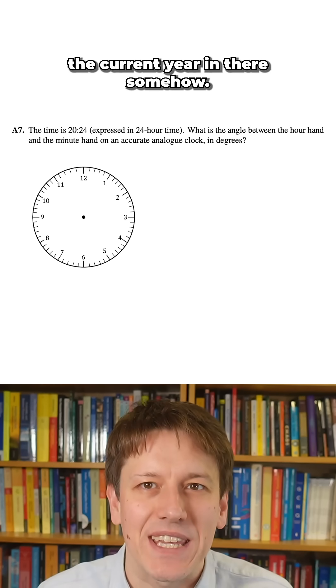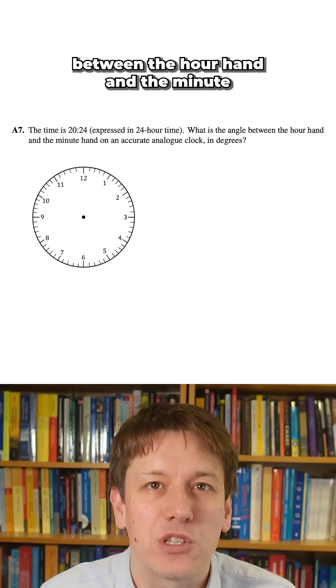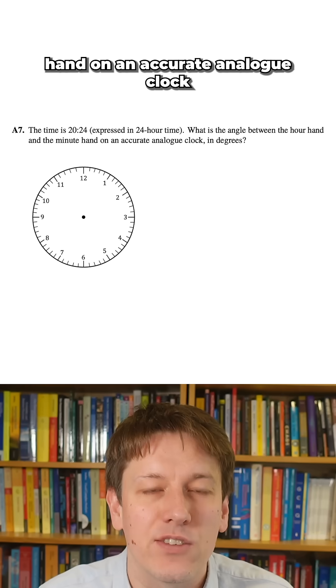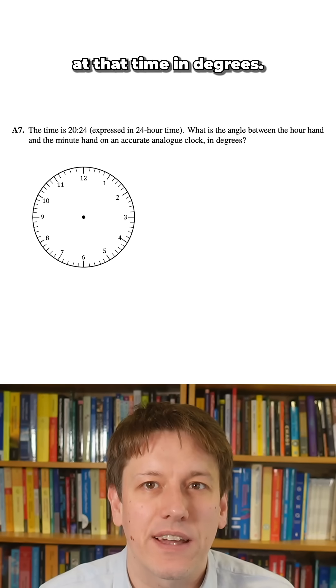They always like to get the current year in there somehow. Here we want to find the angle between the hour hand and the minute hand on an accurate analog clock at that time in degrees.